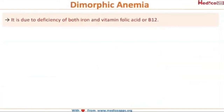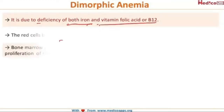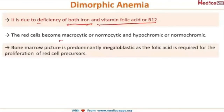Dimorphic anemia is the most common type of anemia seen in developing countries like India. It is due to the deficiency of both iron and folic acid or B12. In this condition, the red blood cells become microcytic or may remain normocytic, and they are either hypochromic or normochromic.